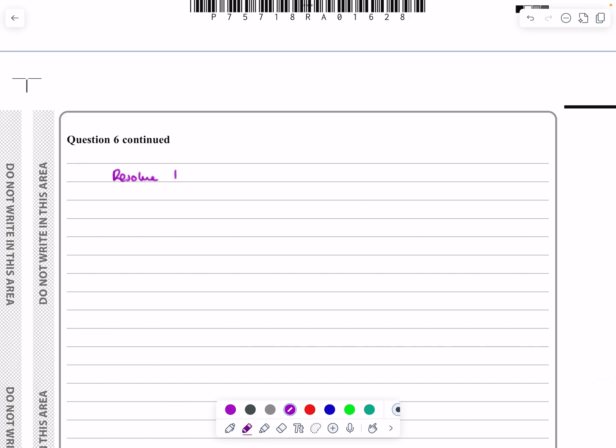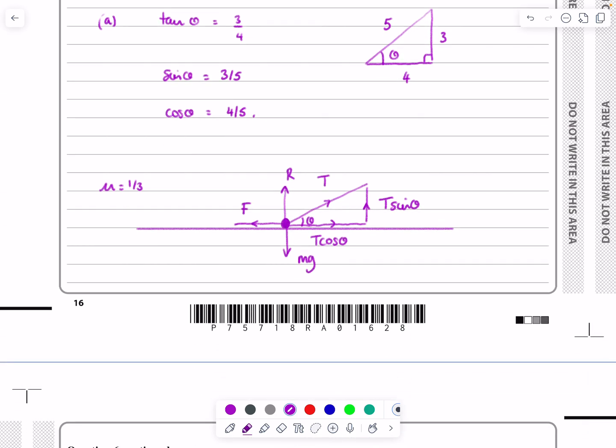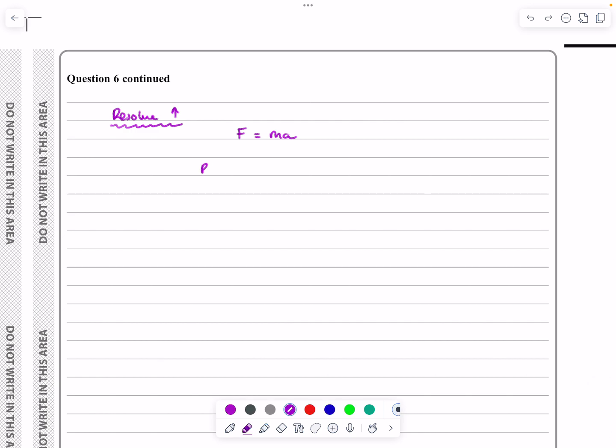Resolve vertically. I think it's really important to label these things. Resolving vertically, it's in equilibrium. There's constant speed, no acceleration. So if it's in equilibrium, the two forces up are equal to the force down. R plus T sin theta equals mg. We know sin theta is three-fifths, so R equals mg minus three-fifths T.